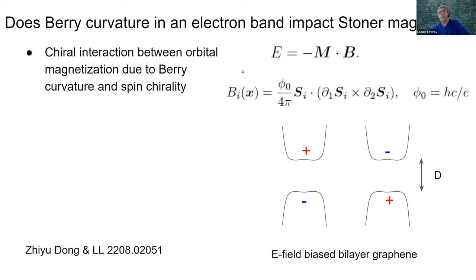This interaction is allowed by symmetry because it looks like the general electromagnetic interaction between a magnetic moment and an external magnetic field. However, both m and B play unusual roles: B is not an external field — it is an intrinsic field arising due to twisting of the spin texture, and m is the orbital magnetization due to Berry curvature.